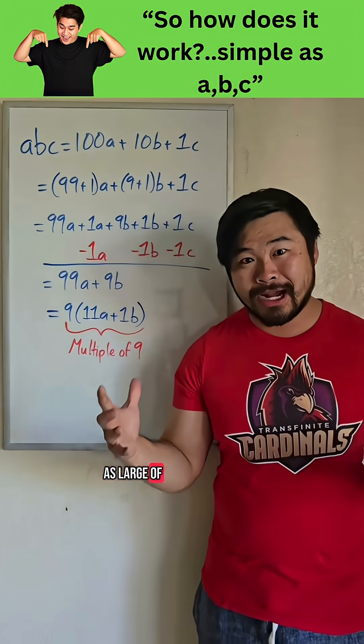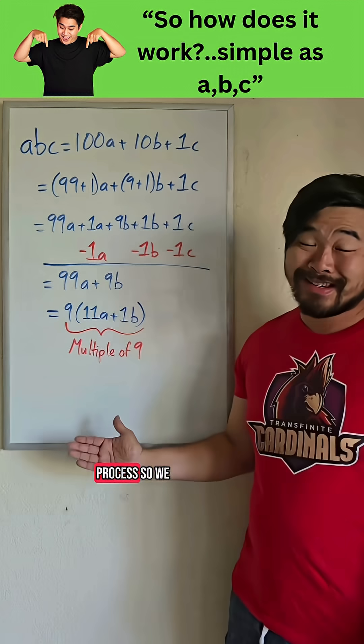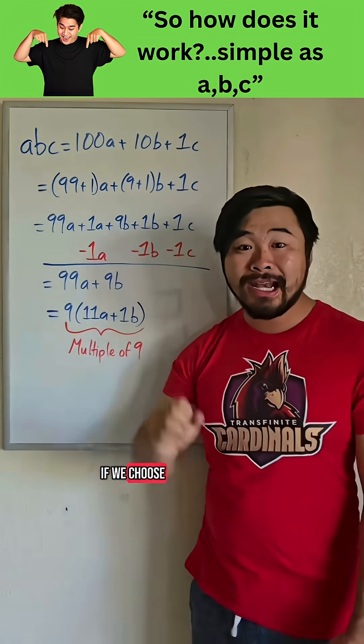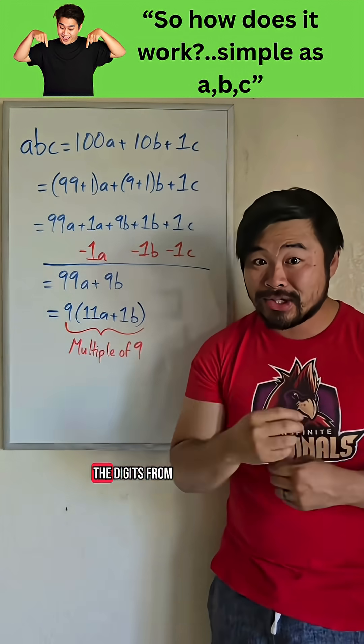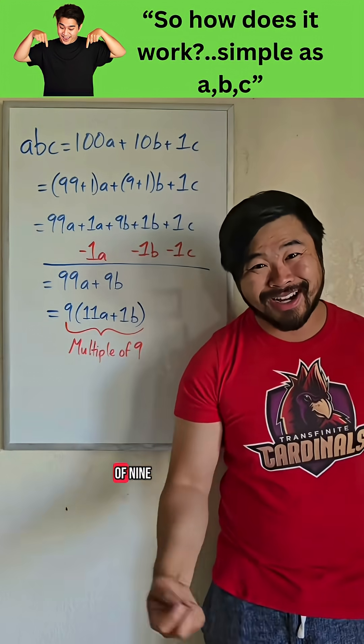We can do this with as large of a number as we want. It's the same process. So we can see that if we choose any number and subtract the digits from that number, we will always get a multiple of 9.